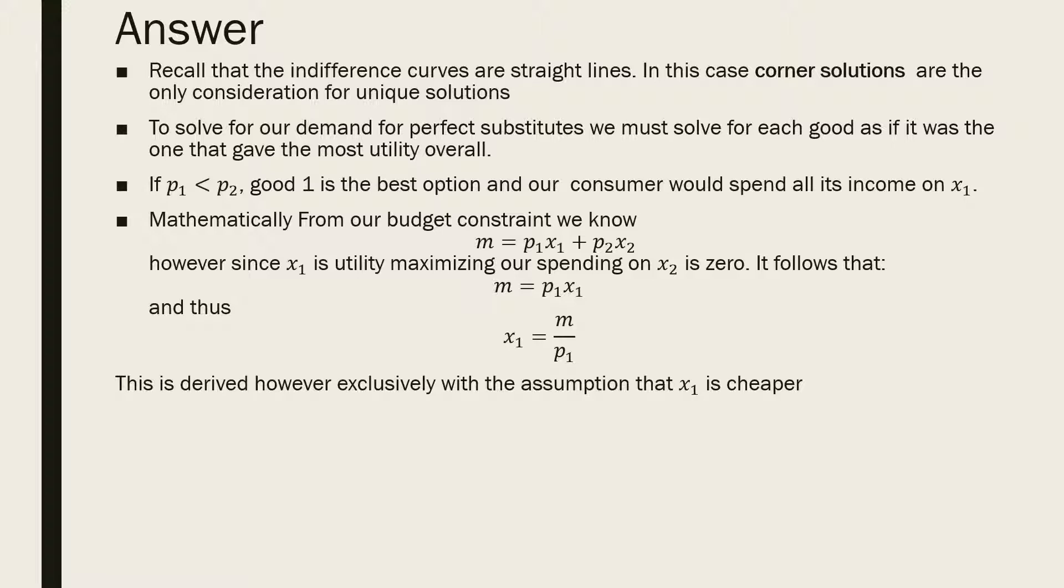It follows that our budget constraint really practically is m equals p1x1. And just doing a little bit of algebra, we find that the demand in this case is m all over p1 for good x1.